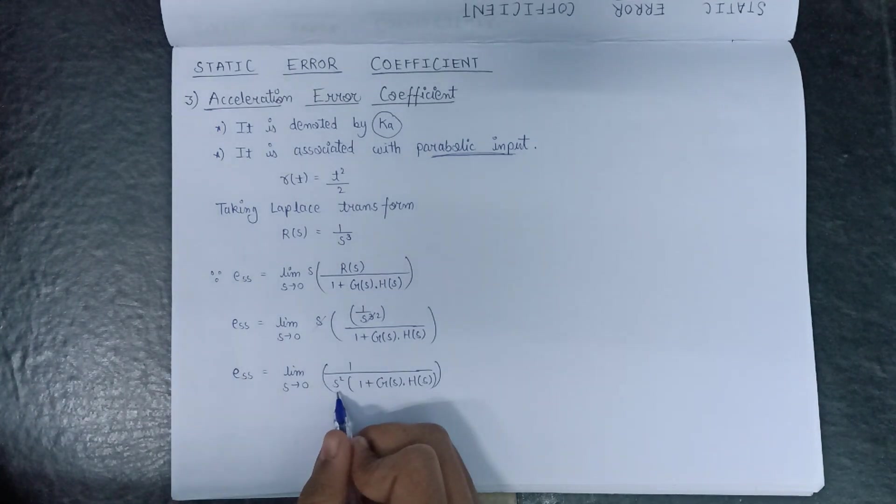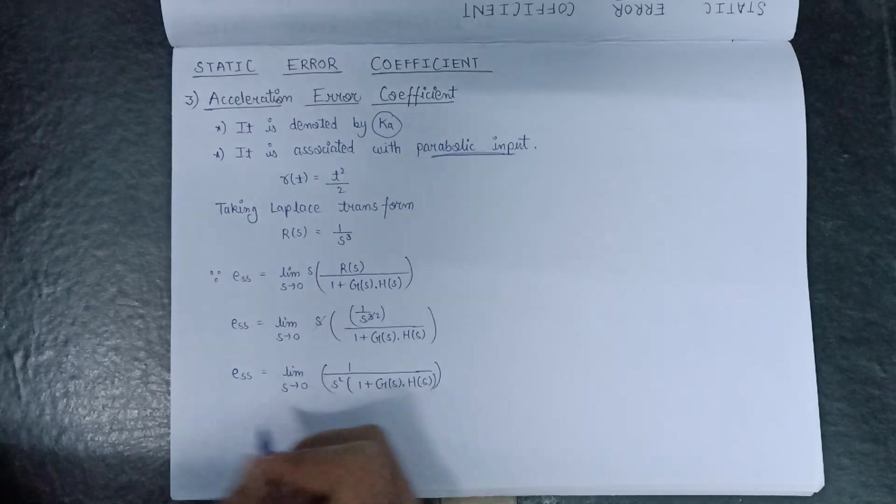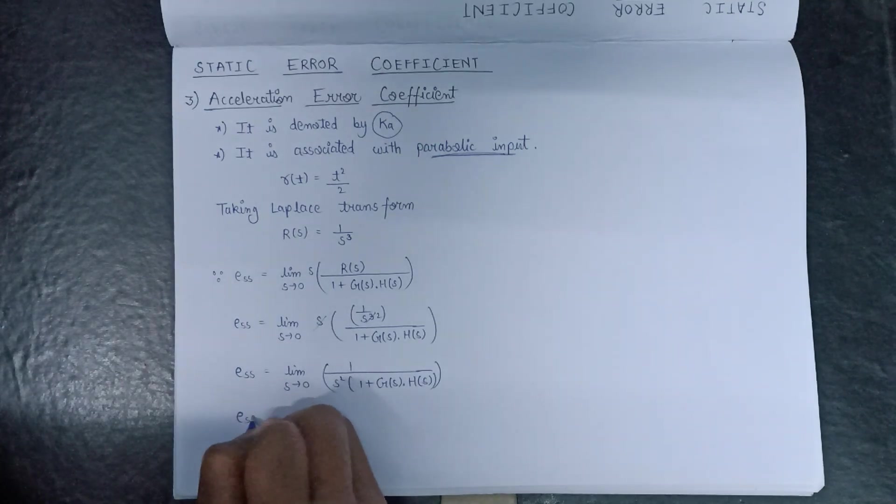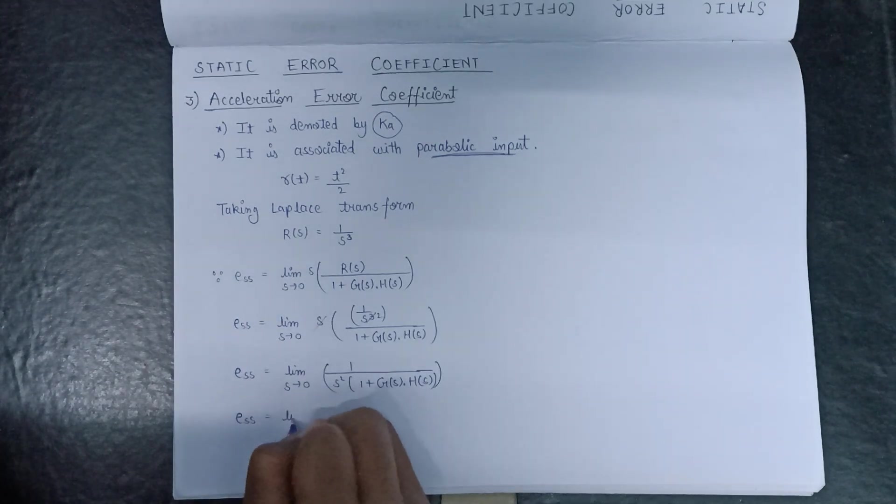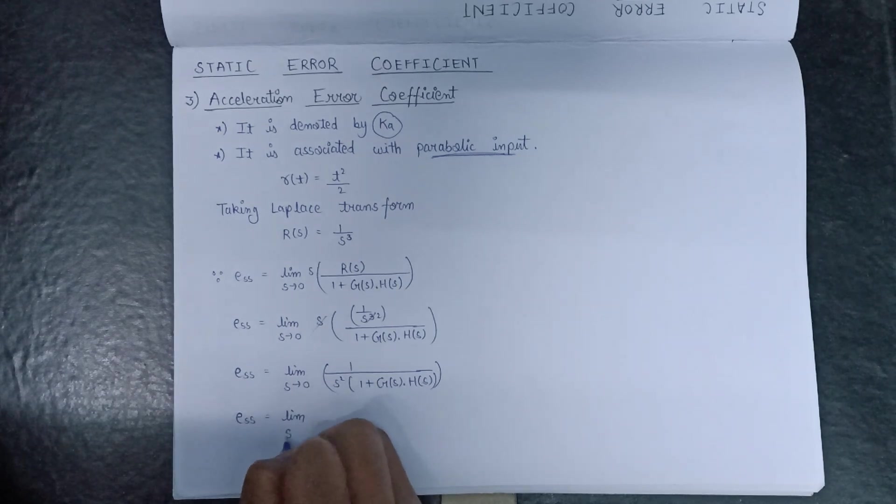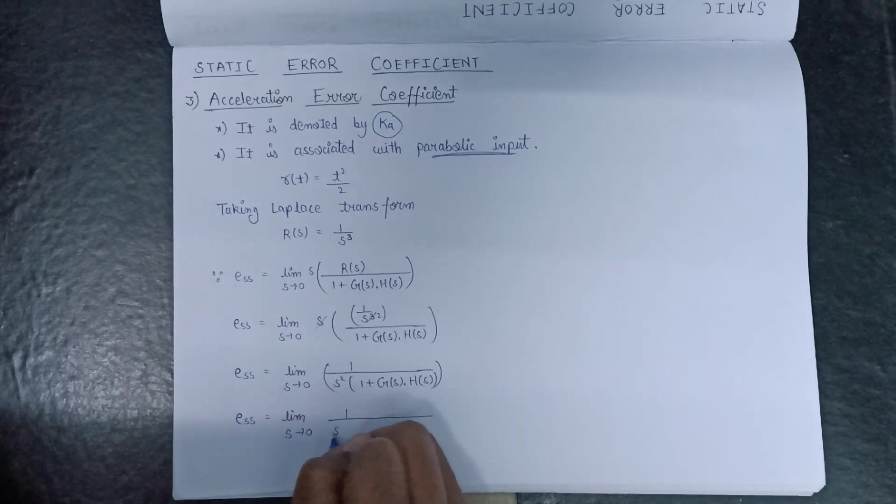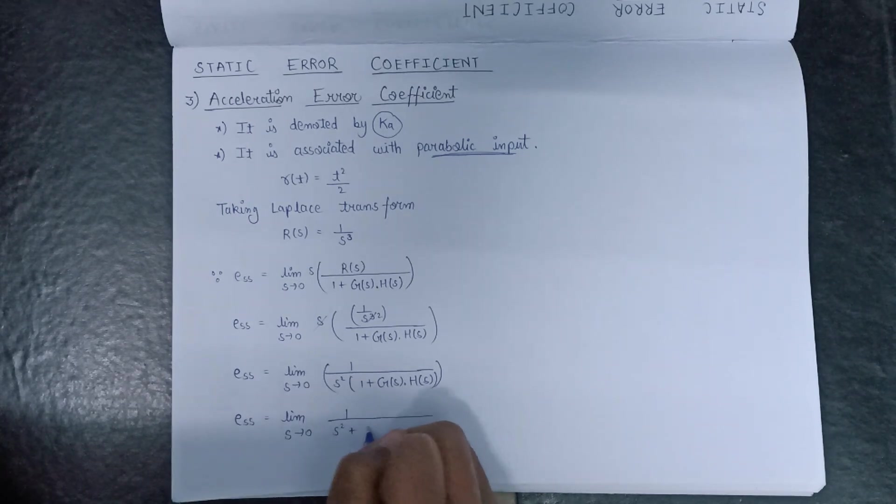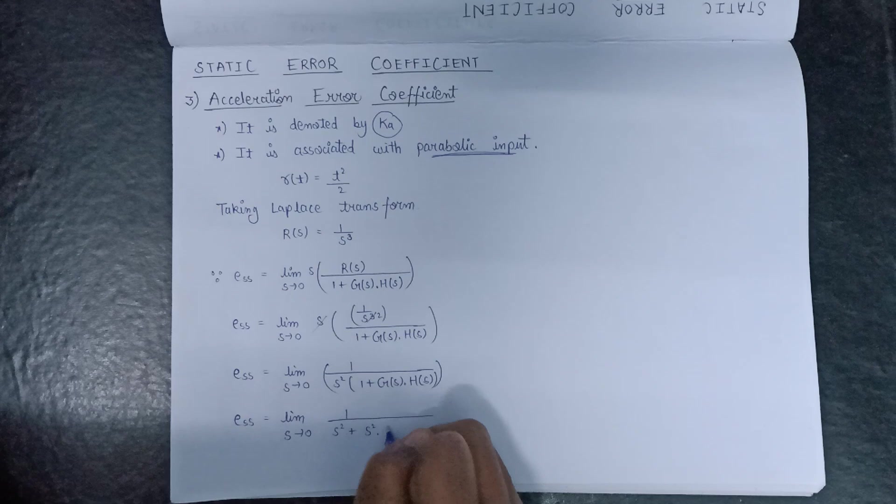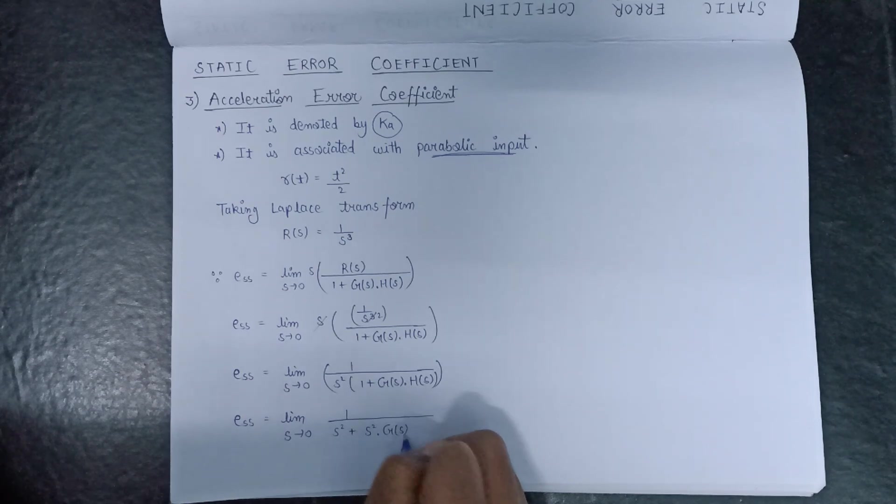After this we will multiply this s² inside bracket. We get E(s) will be equal to limit s tends to 0, 1/(s² + s²·G(s)·H(s)).